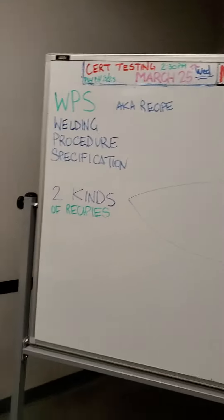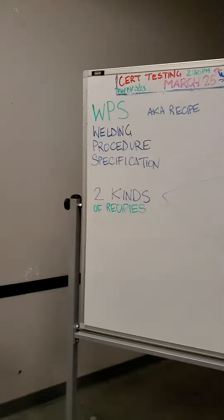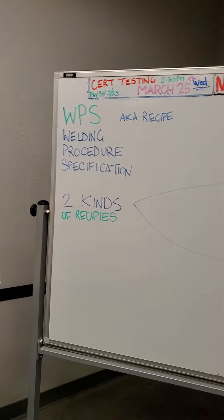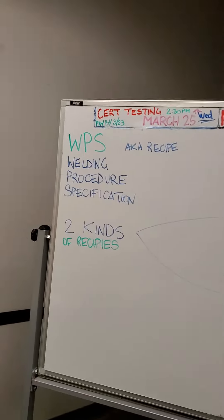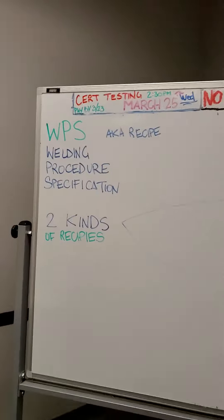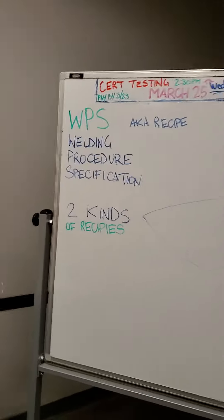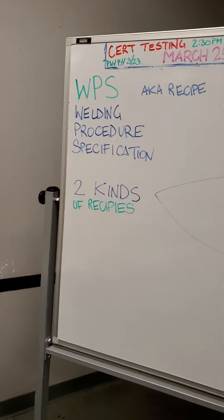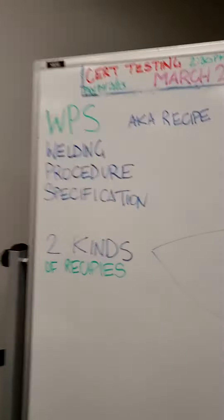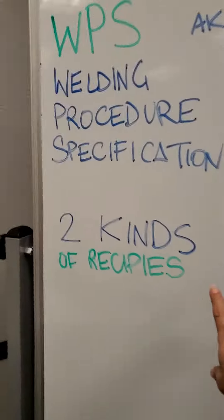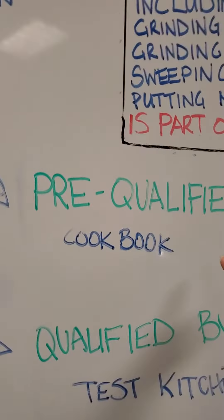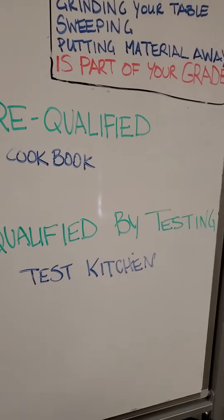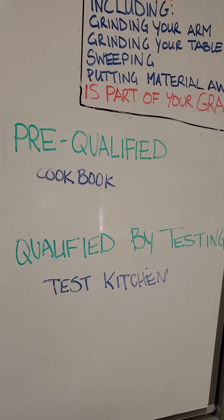So ultimately, Chapter 35 talks about welding procedure specifications, or WPS. I want you to think of a WPS like a recipe. There are two kinds of recipes that we have: one that is pre-qualified, and then one that's qualified by testing.